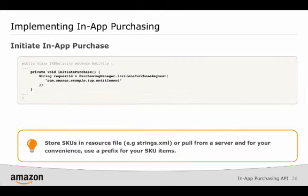You can now make a call to the In-App Purchasing API to initiate a purchase for the SKU you submitted to the developer portal. The returned request ID can be used to match the request ID in the callback purchase response object. It is a best practice to store SKUs in a resource file, for example strings.xml, or pull them from a server.